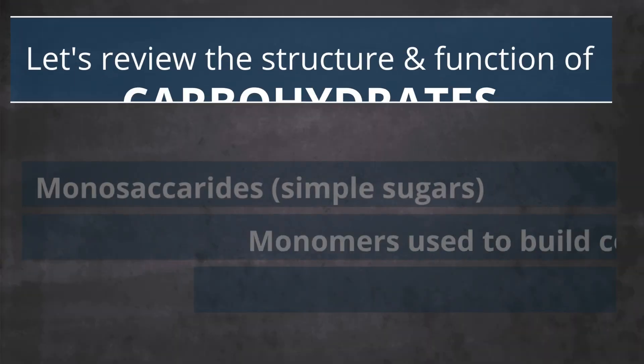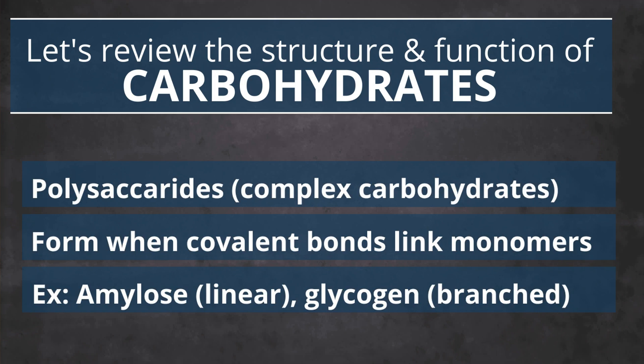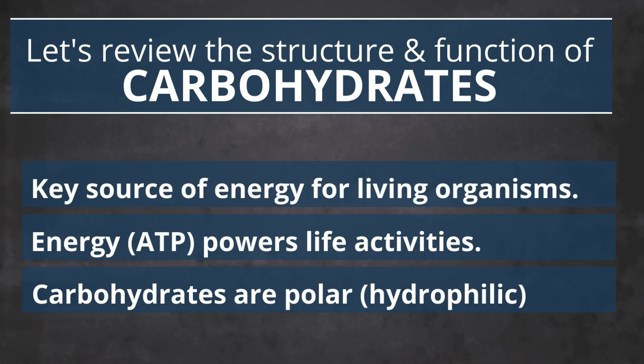Let's close with a quick review. Monosaccharides or simple sugars are the monomers used to build larger carbohydrates. Polysaccharides or complex carbohydrates are formed when covalent bonds link monosaccharides into larger linear or branched molecules. Carbohydrates are an important source of energy for all living organisms. By consuming a carbohydrate-rich diet, rock pocket mice are able to obtain the energy they need to carry out life activities while also taking advantage of the properties of carbohydrates, which allow the animals to boost the water content of their main food source. If you're ready to learn more about the other types of molecules critical for life, you should check out this video right here.